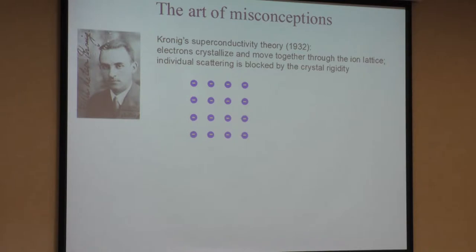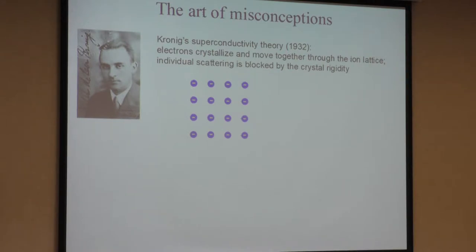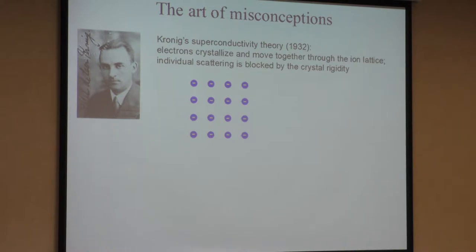After the discovery of superconductivity, there were lots of effort to find the right theory. One such theory was written by Ralph Kronig. The title of the paper from 1932 was very simple: 'The Theory of Superconductivity,' just in German. His idea was that at low temperature, electrons build up into a crystal, and this crystal slides through the ionic lattice without friction. He argued that individual scattering is inhibited because this crystal is rigid. Today, we know that this theory is incorrect, but this incorrect theory later evolved.